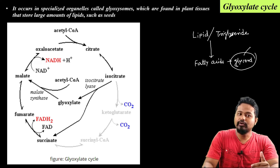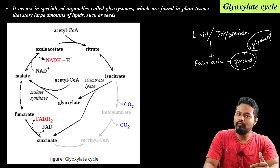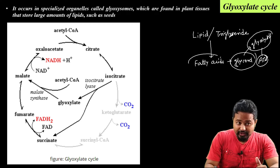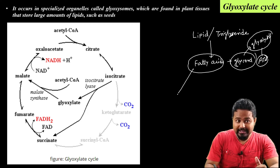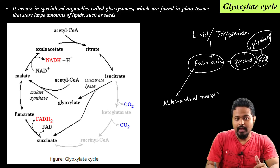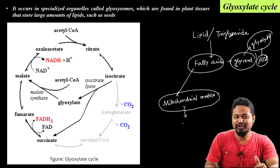The glycerol directly enters glycolysis to produce ATP. The fatty acids undergo a special type of oxidation in the mitochondrial matrix called beta-oxidation.